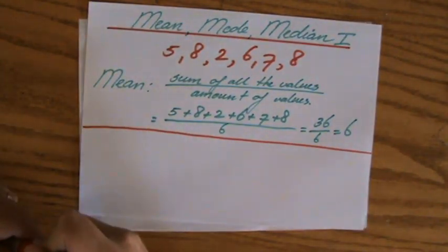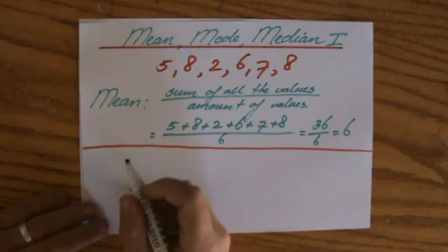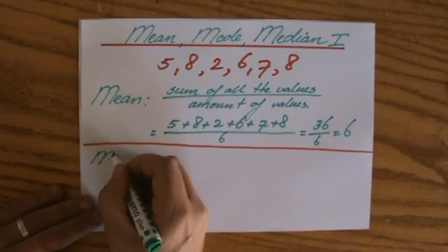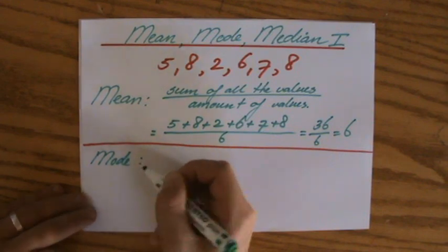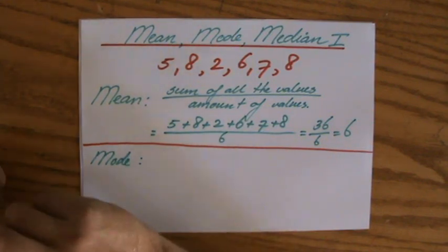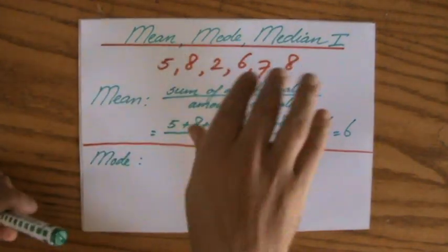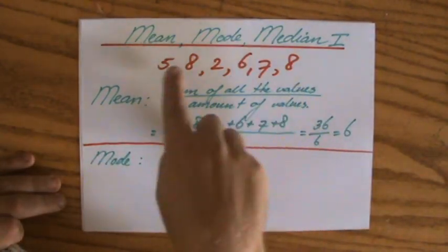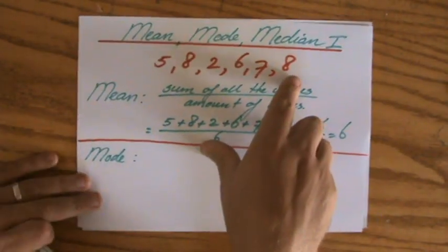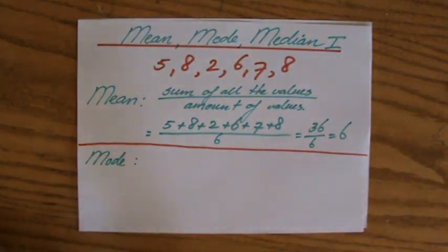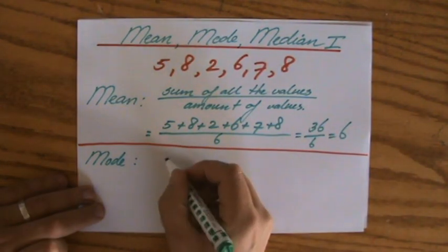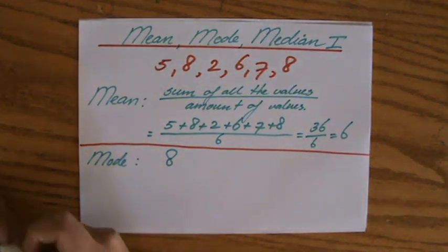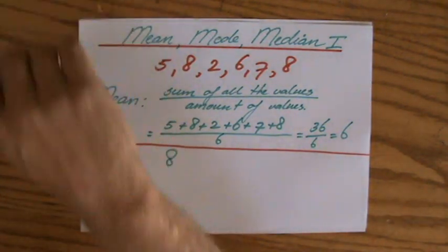The mode is that piece of information that occurs most frequently. In this particular case, that is the eight — the eight occurs twice while the rest only occurs once. So the eight is the mode. It's as simple as that.